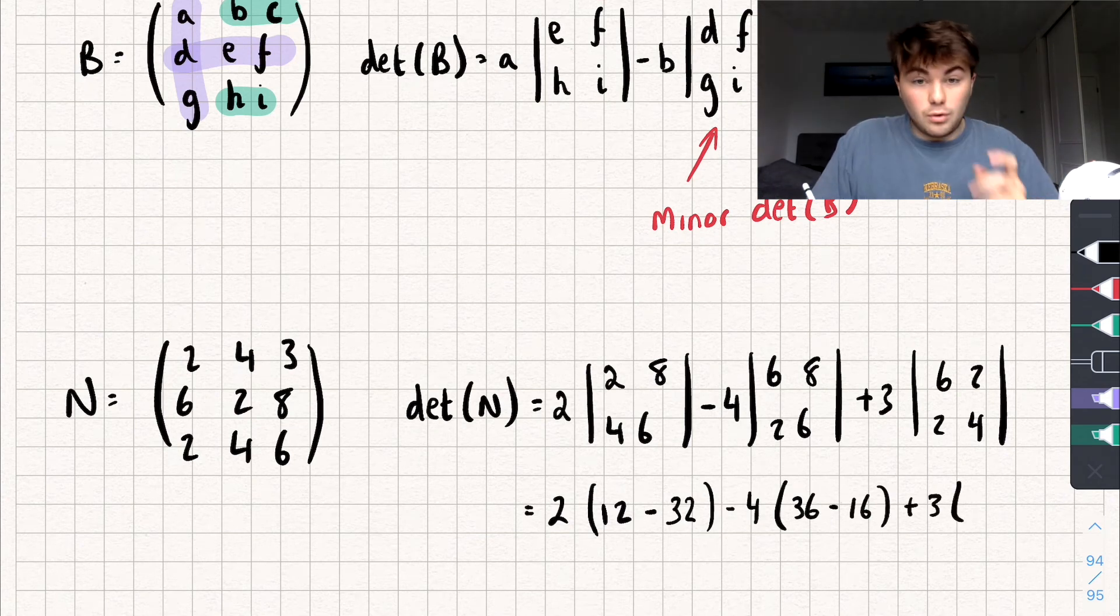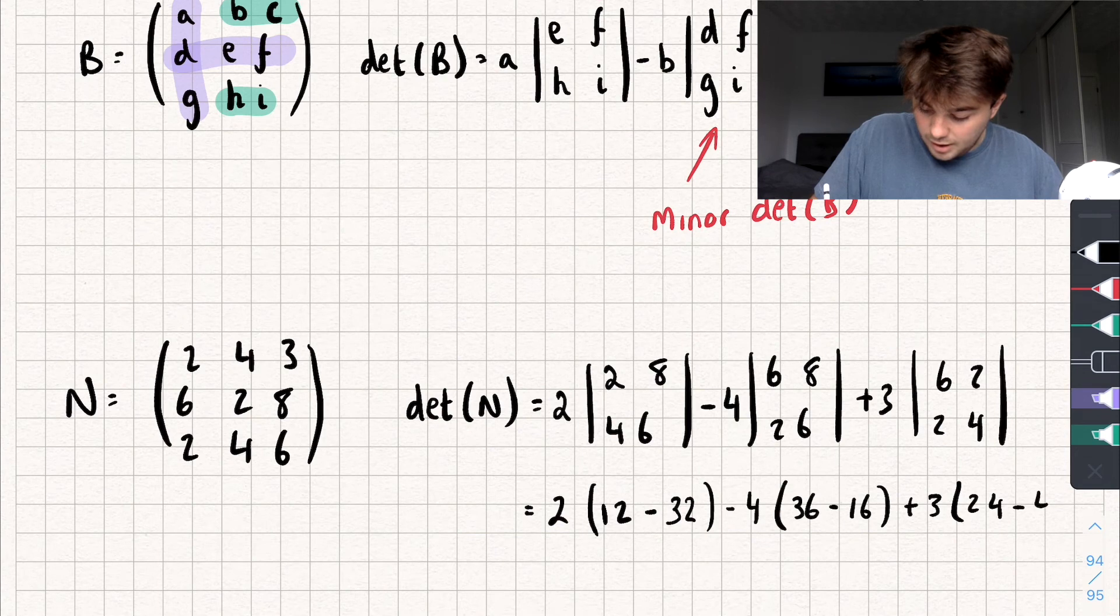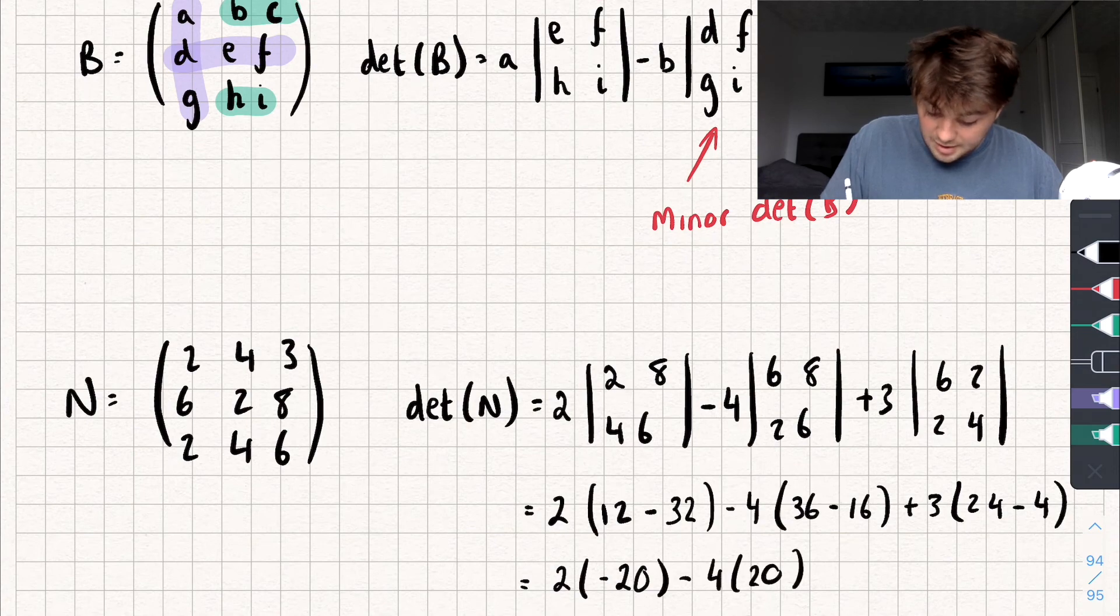And finally, 3 multiplied by 6 times 4 gives me 24, subtract 4.